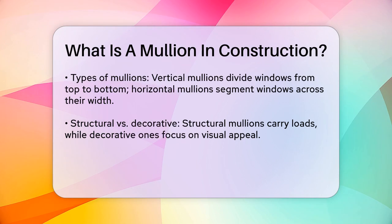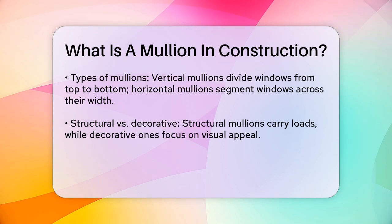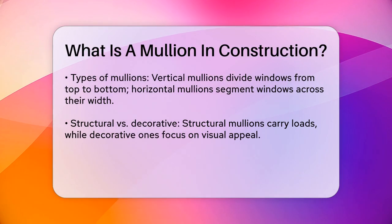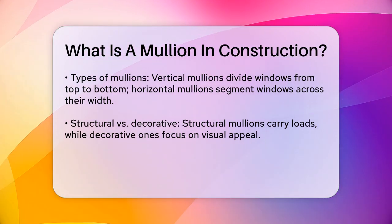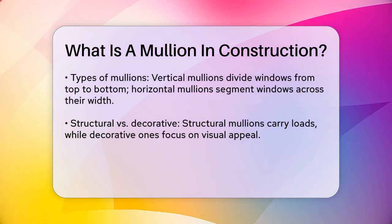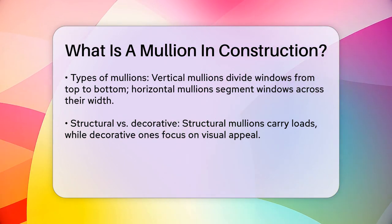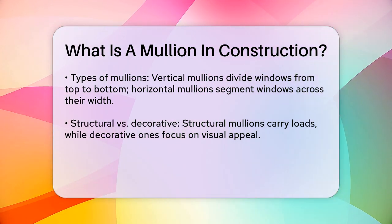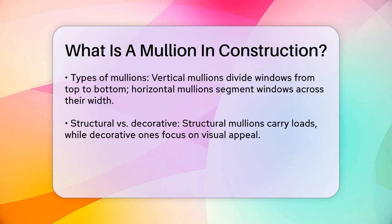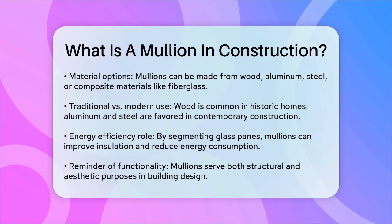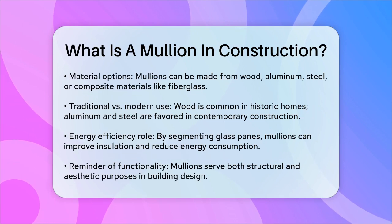Decorative mullions, while still providing some structural support, are more focused on enhancing the visual appeal of the building. Mullions can be made from various materials, including wood, aluminum, steel, and even composite materials like fiberglass. Wood mullions are often used in traditional or historic-style homes for their classic look, while aluminum and steel mullions are popular in modern construction due to their durability and lightweight properties.